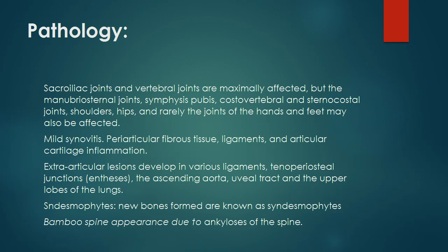The joints show mild synovitis. Periarticular fibrous tissue, ligaments, and articular cartilage also show inflammation. Extraarticular lesions develop in various ligaments, tenoperiosteal junctions (enthesis), the ascending aorta, uveal tract, and the upper lobes of the lungs.